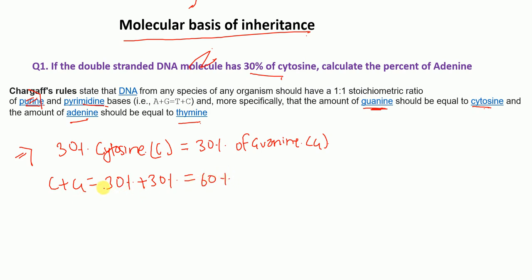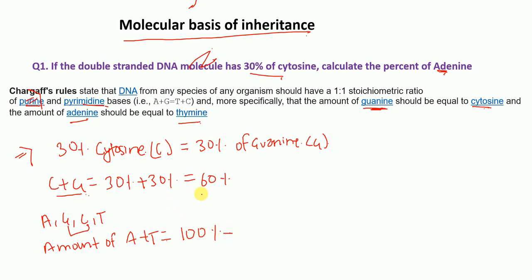Since a DNA molecule is made up of four bases — adenine, guanine, cytosine, and thymine — and we know C + G = 60 percent, the amount of A + T must equal 100 percent minus 60 percent, which is 40 percent.